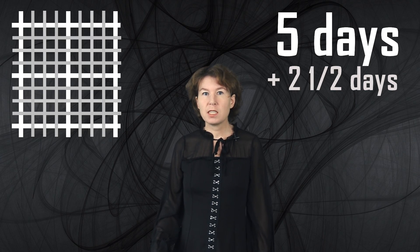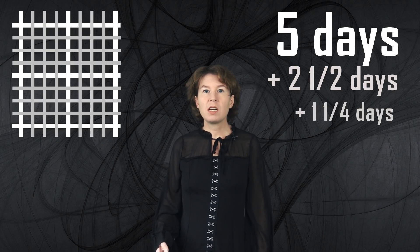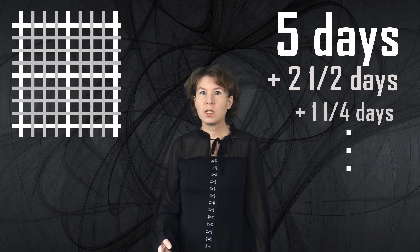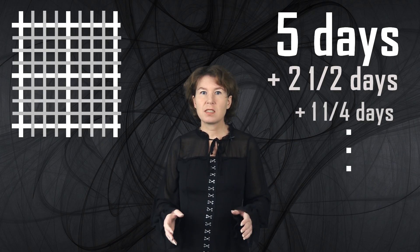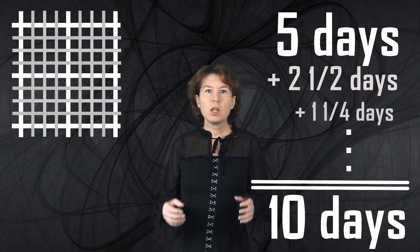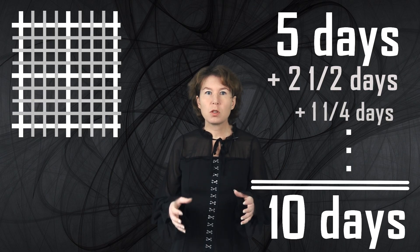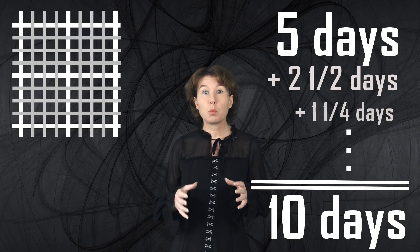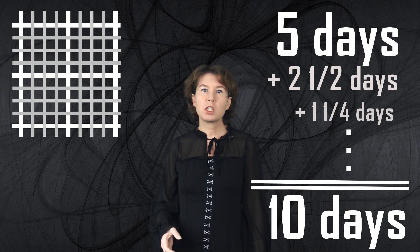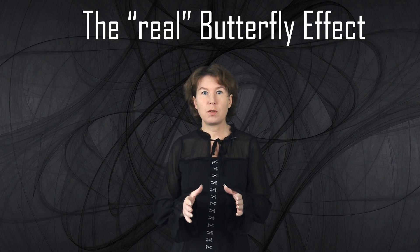Then you make your grid finer again, and again you will gain only half of the time — five days plus two and a half days plus one and a quarter days, and so on. Most of you will know that if you sum up this series all the way to infinity, it converges to a finite value. In this case, that's ten days. This means that even with an arbitrarily fine grid and perfectly known initial conditions, you will only be able to make predictions for a finite amount of time. And this is the real butterfly effect.